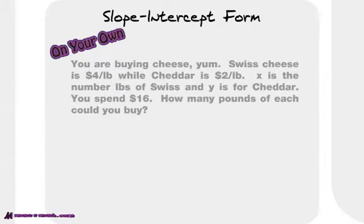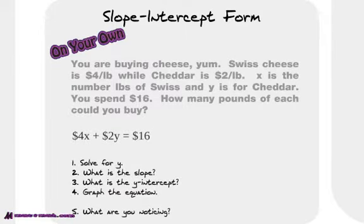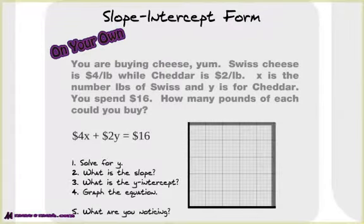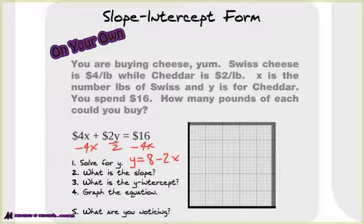Now we're going to go buy some cheese. We love cheese — Swiss cheese and cheddar. You're going to write an equation: $4 a pound for Swiss and $2 a pound for cheddar. Try to write it in standard form. But what I want you to do now is take this equation and solve for y — put it in y equals mx plus b form, slope-intercept form. If we subtract 4x from both sides and then divide by 2, we end up with y equals 8 minus 2x. That's what we graph.